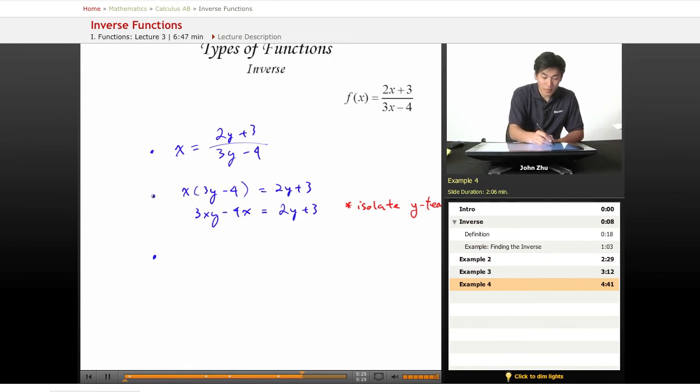We have 3xy minus 2y equals 4x plus 3. We move the terms to the other side, then factor out a y. We get y times 3x minus 2 equals 4x plus 3.